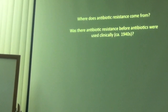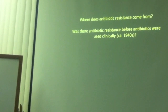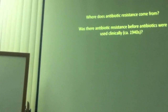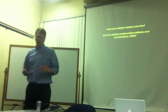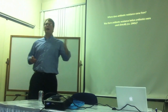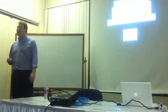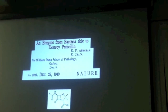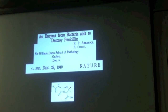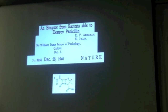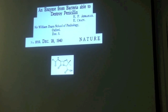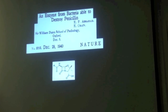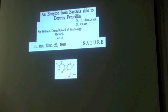That begs the question: where does antibiotic resistance come from? Was there antibiotic resistance before we knew about antibiotics — before humans started using sulfonamides, penicillin, and everything else? The answer is yes. In 1940 — after the discovery of penicillin but prior to its widespread use — an enzyme from bacteria that could destroy penicillin was discovered. This particular enzyme, beta-lactamase, is still a problem today. The availability of antibiotic resistance mechanisms predates human use of antibiotics.